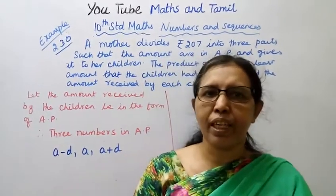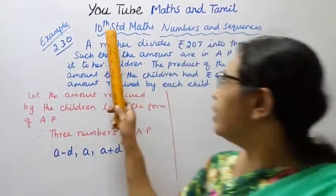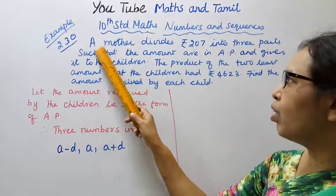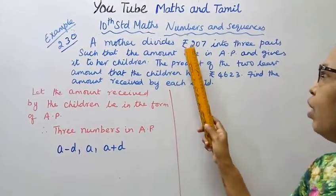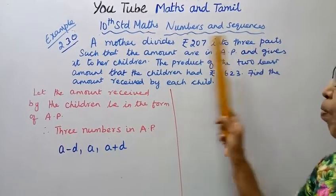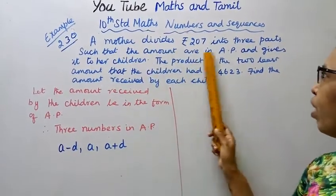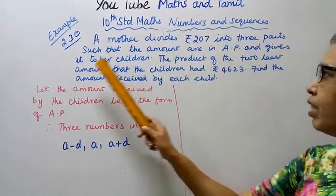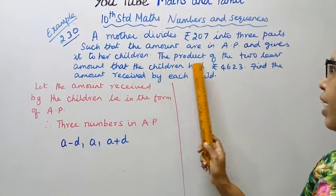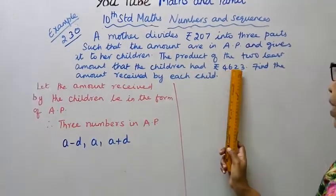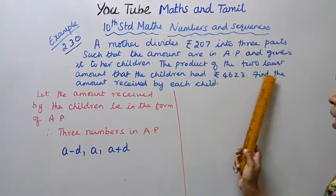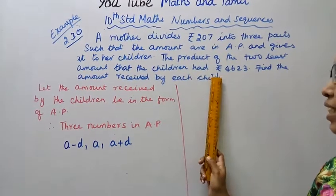Hello students, welcome to Max and Tamil channel. Example 2.30: A mother divides rupees 207 into 3 parts such that the amounts are in AP and gives it to her children. The product of the 2 least amounts that the children had is rupees 4,623. Find the amount received by each child.